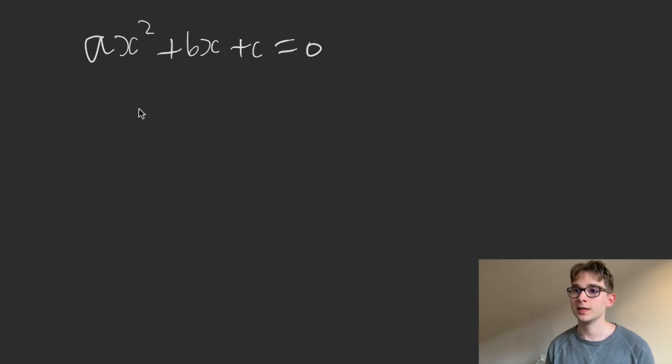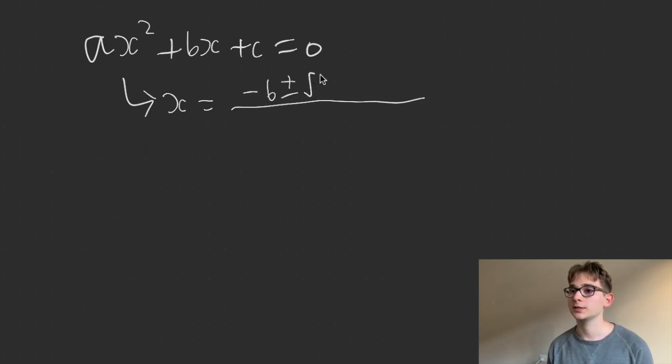And we also know that the standard form for the quadratic formula is x equals minus b plus minus square root of b squared minus 4ac all over 2a.